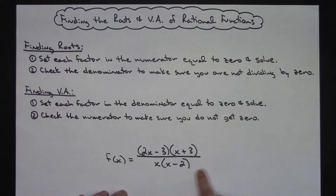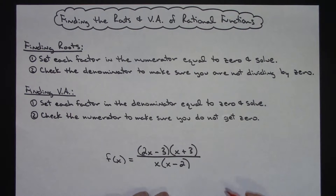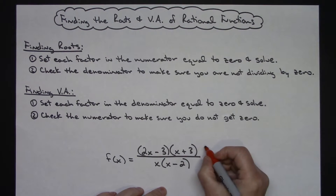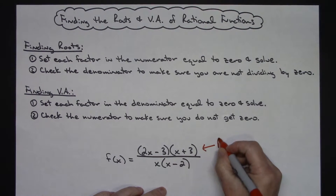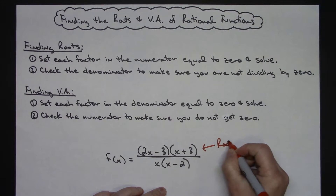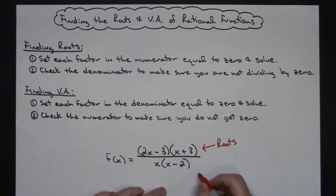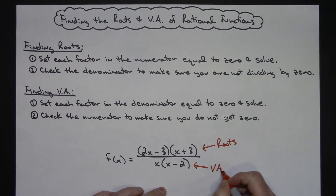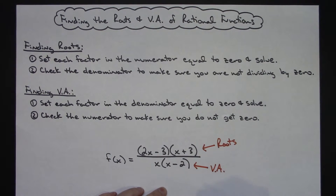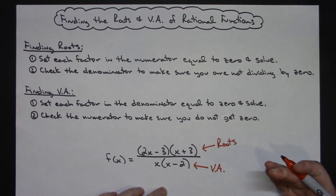Here's your rational function. From the two shortcut explanations, your roots are always going to come from the numerator, and your vertical asymptotes are always going to come from your denominator. The main thing is you just want to always check it in its opposite location to make sure you don't get a zero.